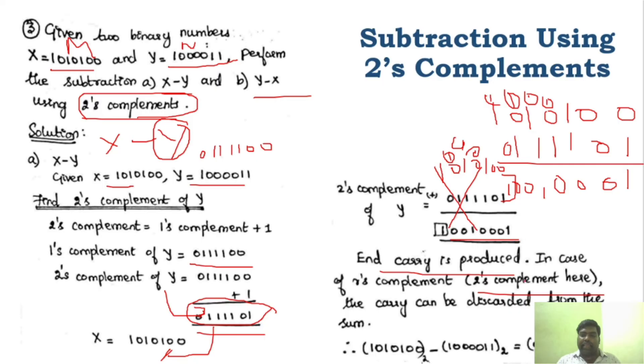Since it is 2's complement, the carry is discarded. So the answer for X minus Y is 0, 0, 1, 0, 0, 0 — that is the result. This is the positive answer for X minus Y.